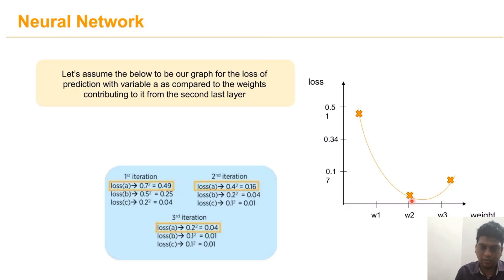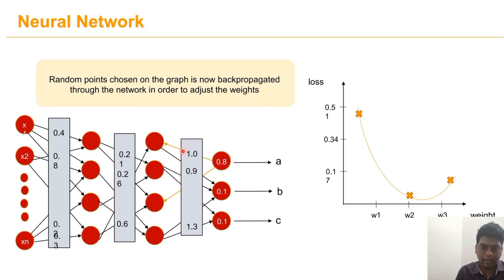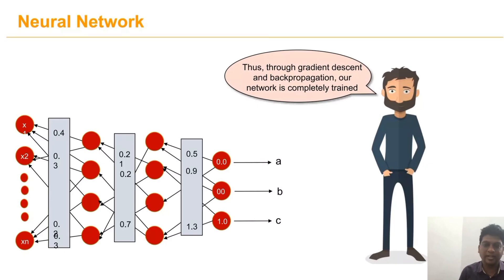At the minimum point — where loss equals 0.04 and the surrounding values are 0.16 — we can find the correct weight that gives the correct predicted value. This is then propagated throughout the network, indicated in orange, to adjust all the weights. I hope you understand the concept of the gradient descent optimization algorithm and the backpropagation rule. Thanks for watching — meet you in the next video. Goodbye from Vijay.